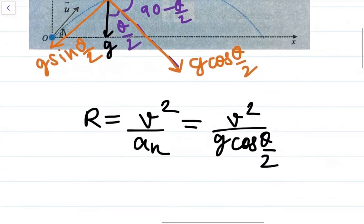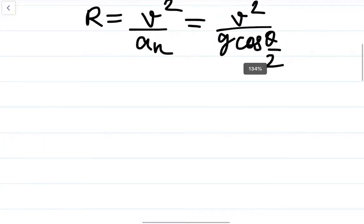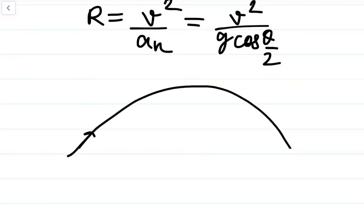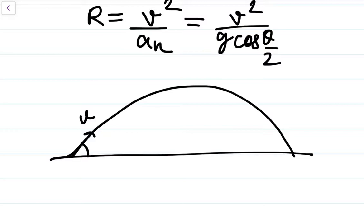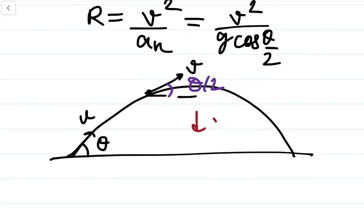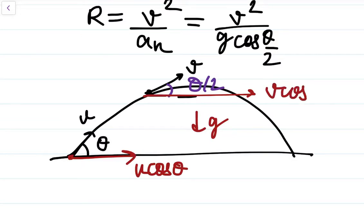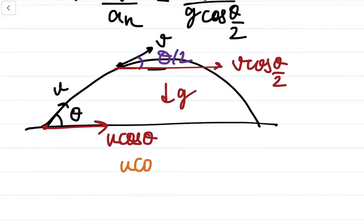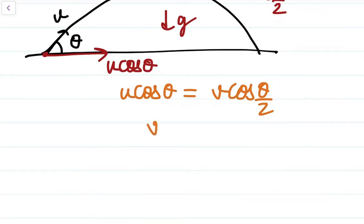We can find velocity V in terms of U. Going back to projectile motion — at the initial point velocity was U at angle theta, and at the point of interest velocity was V making angle theta by two with the horizontal. Since acceleration is only in the downward direction, the horizontal component always remains the same. So U cos theta equals V cos(θ/2), giving us V equal to U cos theta divided by cos(θ/2).